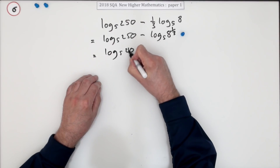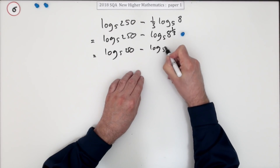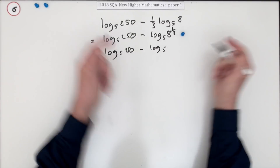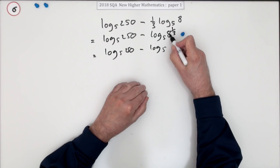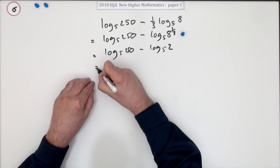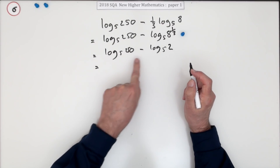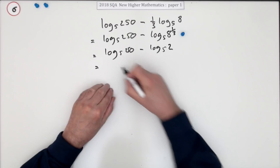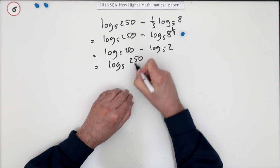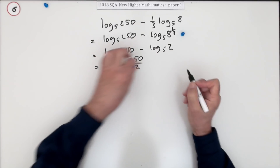Just tidying up: one third as a power means cube root, and the cube root of 8 is 2 — no marks for doing that. Next law of logs: if you're subtracting logarithms, divide the numbers you're putting in. Divide 250 by 2 — that's worth the mark.